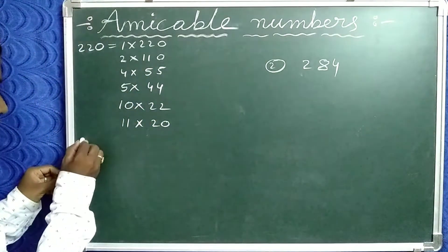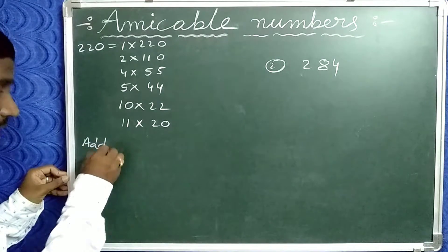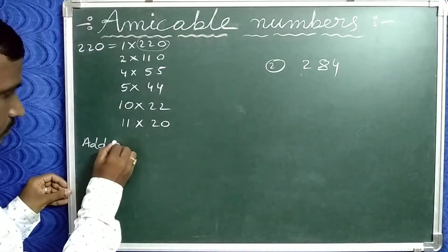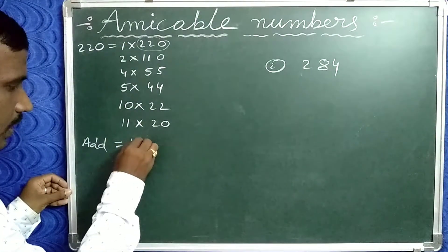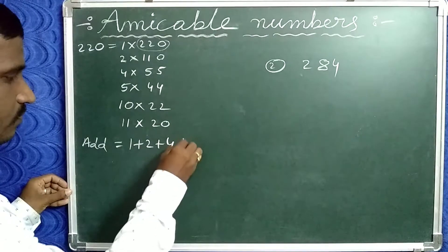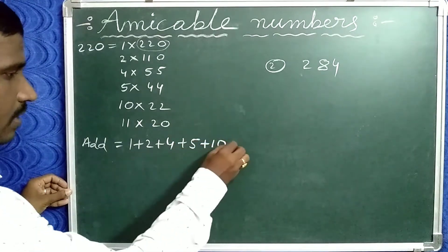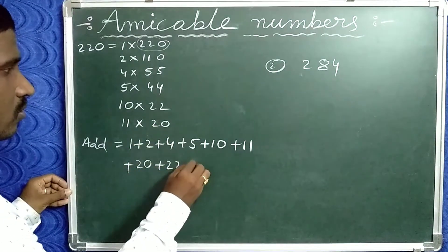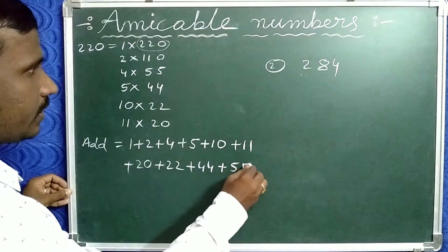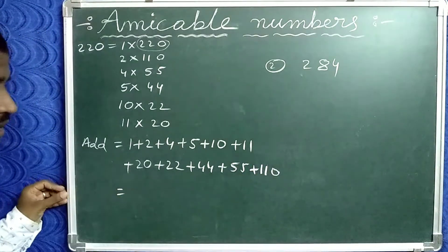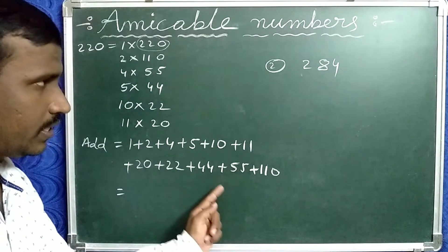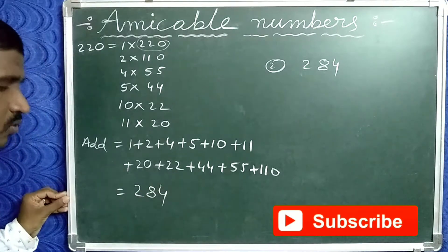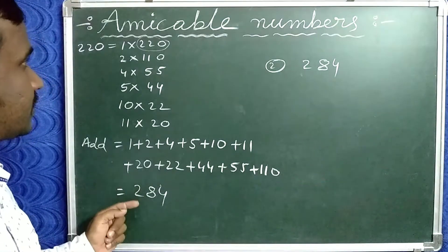Now add all factors of 220 except itself. So: 1 + 2 + 4 + 5 + 10 + 11 + 20 + 22 + 44 + 55 + 110. The sum of all these numbers equals 284.